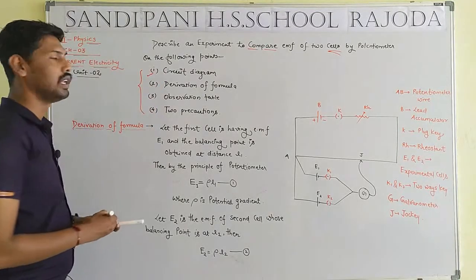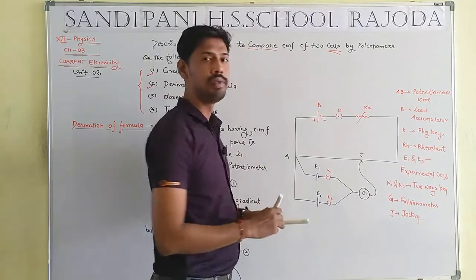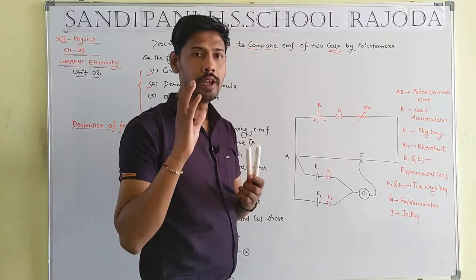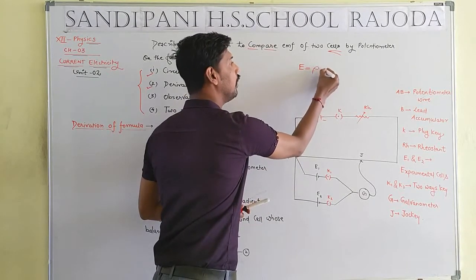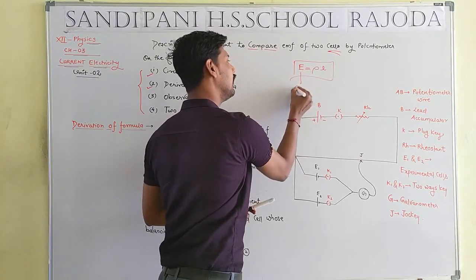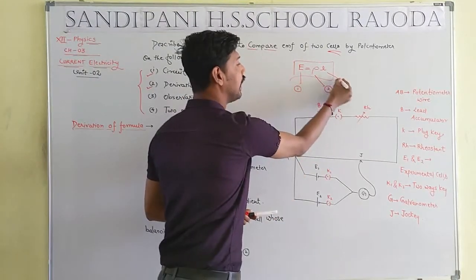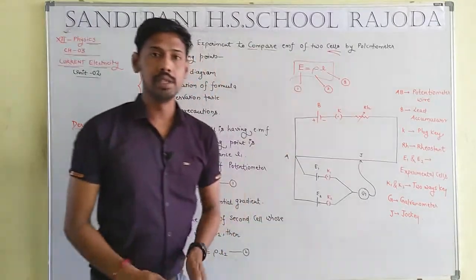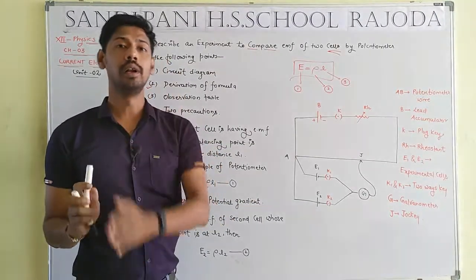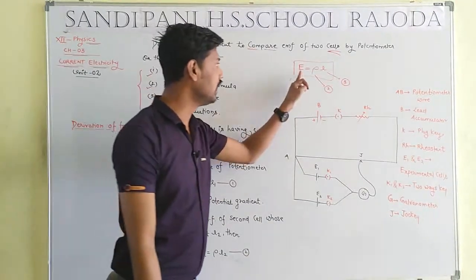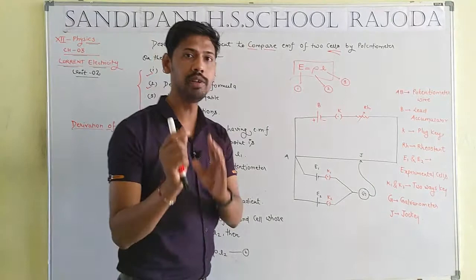Now the second point: derivation of the formula — the mathematical expression. By the definition of electromotive force of a cell, E = ρ × L, where E is the electromotive force of the cell, ρ is the potential gradient, and L is the balancing distance from point A at the time of null deflection.